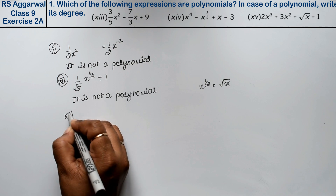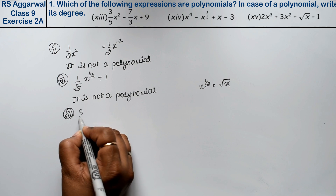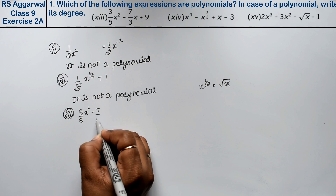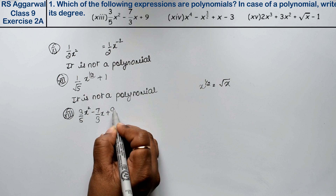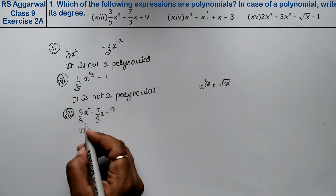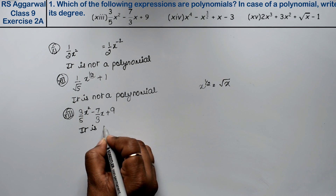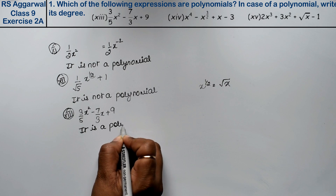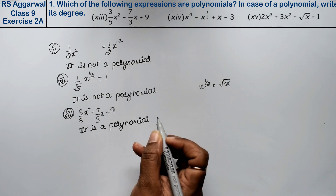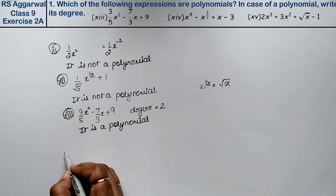Thirteenth part is (3/5)x² minus (7/3)x plus 9. This is a polynomial with degree 2.